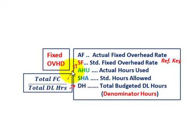We've gone through everything — our spending variance, our production volume variance, and the idle capacity variance. That'll end our discussion.